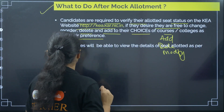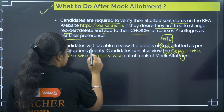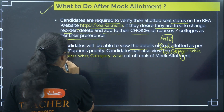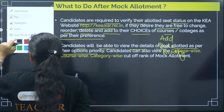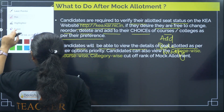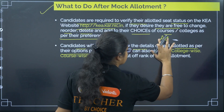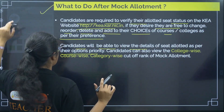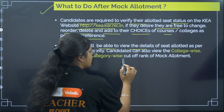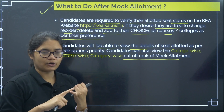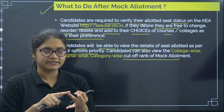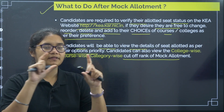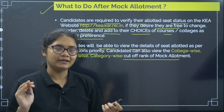Candidates will be able to view the details of the seat allotted as per their option priority. You will be able to see your seat priority, which college code, which course code, which number option — which priority number option — which course, which college, which category you got. Everything will be given in detail in the mock allotment.